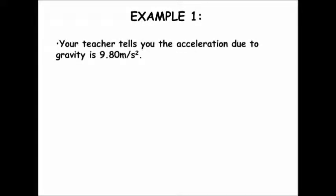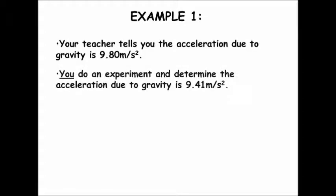If your teacher tells you that the acceleration due to gravity is 9.80 meters per second squared, and then you do an experiment to determine the acceleration due to gravity and find that it's 9.41 meters per second squared — those are the results of your experiment.